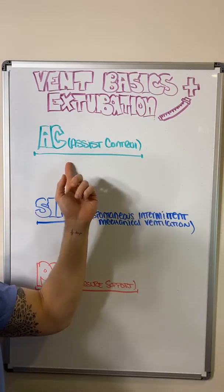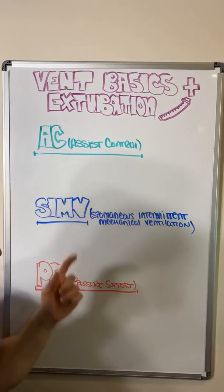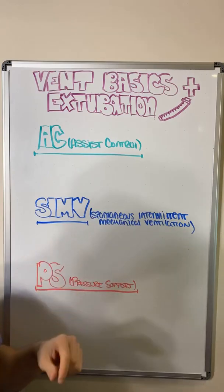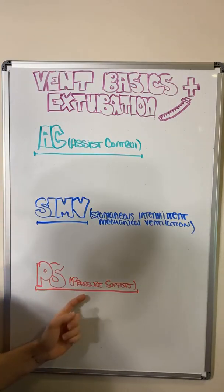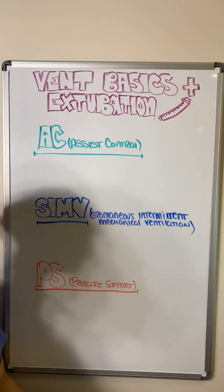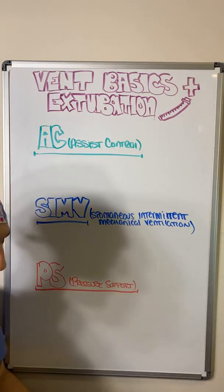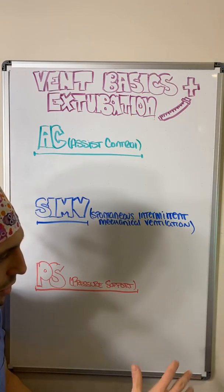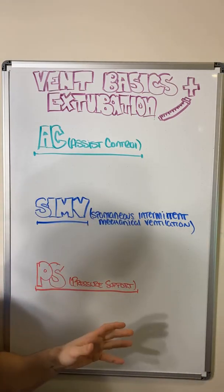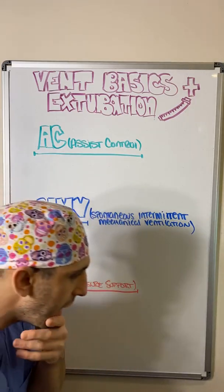We're going to talk about assist control or AC mode, also known as CMV. We're going to talk about spontaneous intermittent mechanical ventilation or SIMV, and we're going to talk about pressure support — these three. There are other ones obviously, but these are the most common ones you're going to see in the unit. Then at the end we're going to talk about extubation, which is my favorite thing.